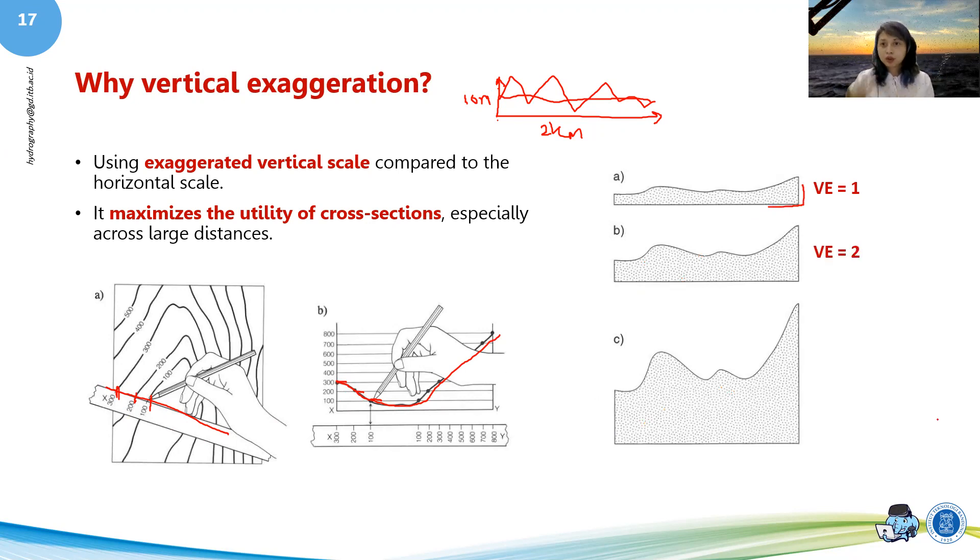If we make it into two vertical exaggeration, then we will have a lot more variation in the depth segment or in the height segment or in the z axis.